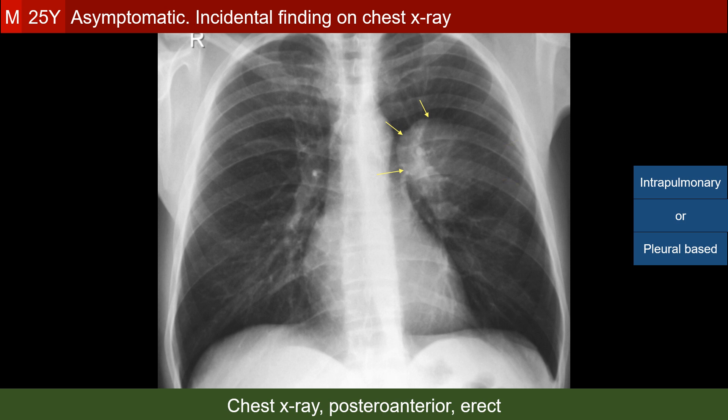The answer comes from two well-known signs. The first is the fading edge sign. Here you see that the lateral and inferior edges of the opacity are fading, unlike the well-defined medial and superior edges. This fading edge sign denotes a pleural-based or chest wall-based lesion.